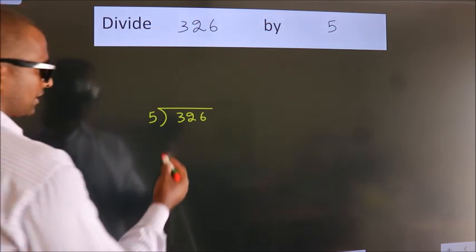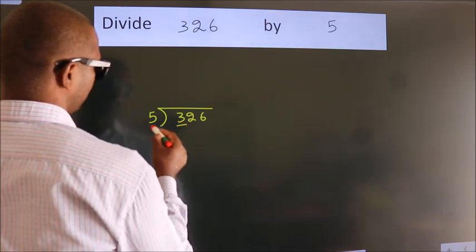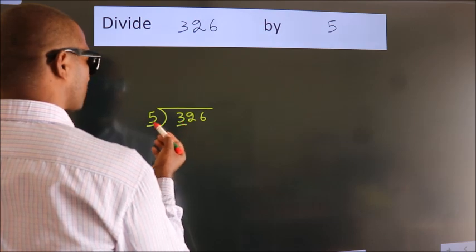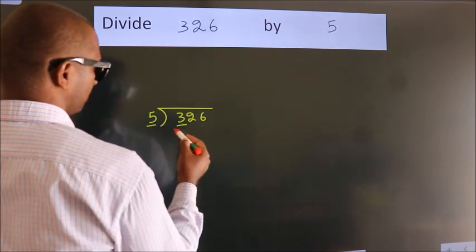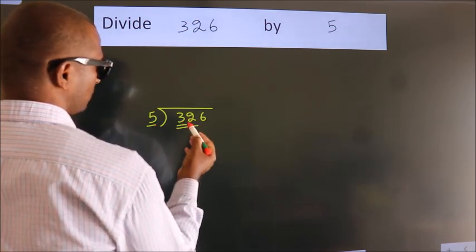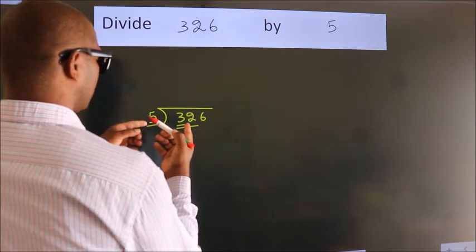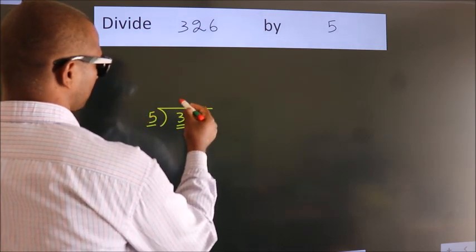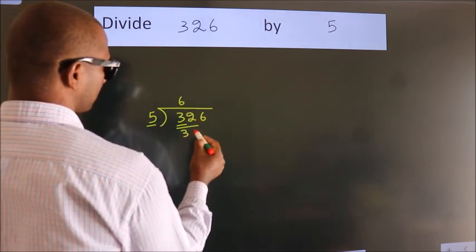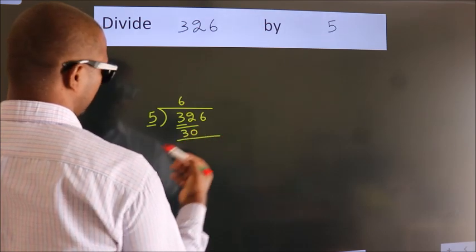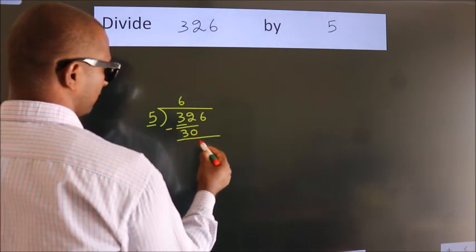Next. Here we have 3, here 5. 3 is smaller than 5, so we should take 2 numbers: 32. A number close to 32 in the 5 table is 5 times 6, which is 30. Now we should subtract. We get 2.